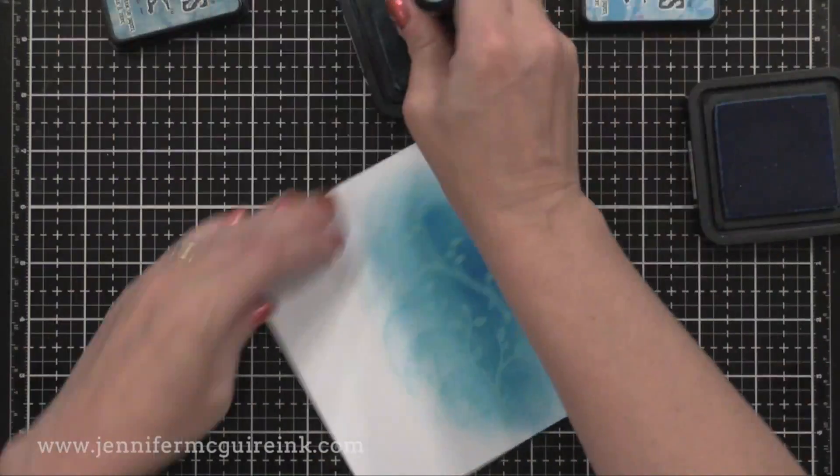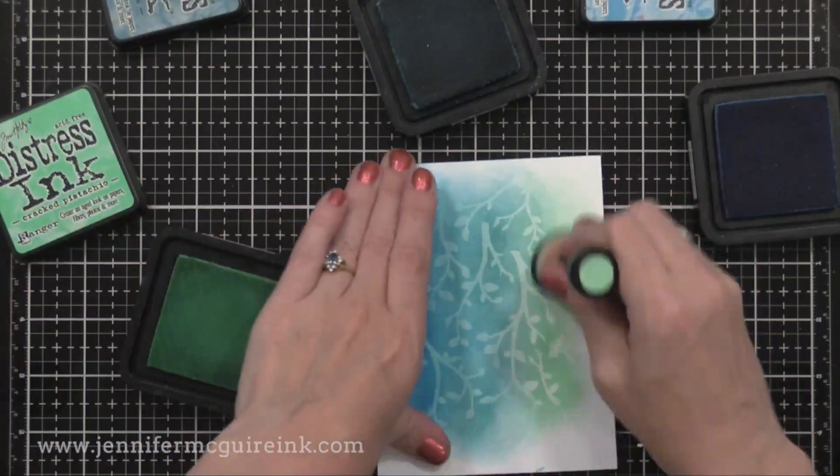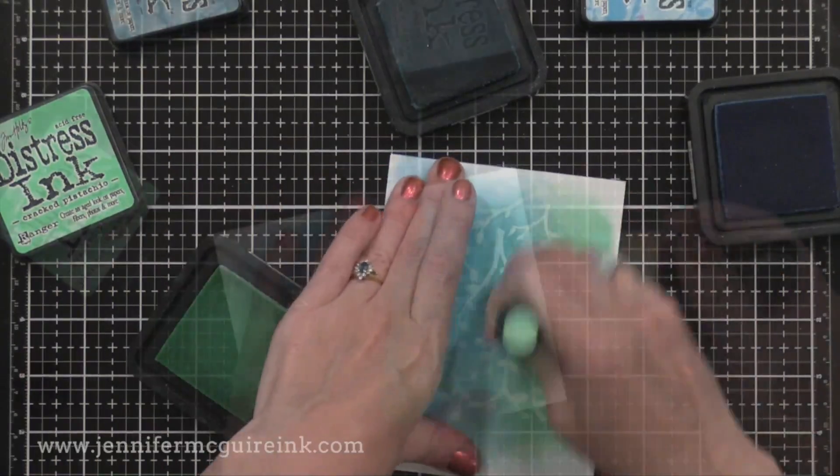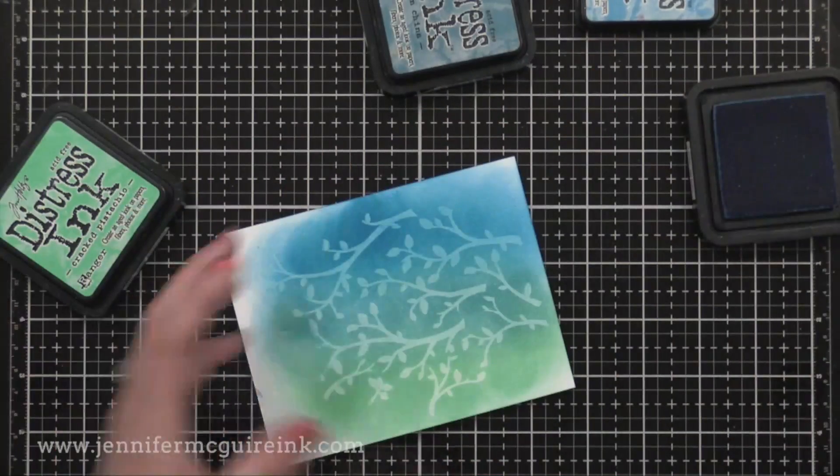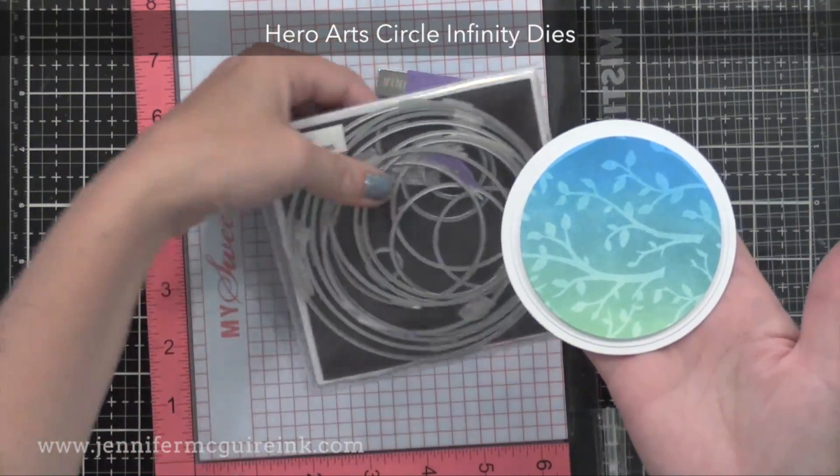Once it's completely dry, I'm applying Distress Ink with an ink blending tool over top. You can use other dye inks, but Distress Ink is great for this, and I know many people already have it. You can see the white ink slightly resists the color we put on top.